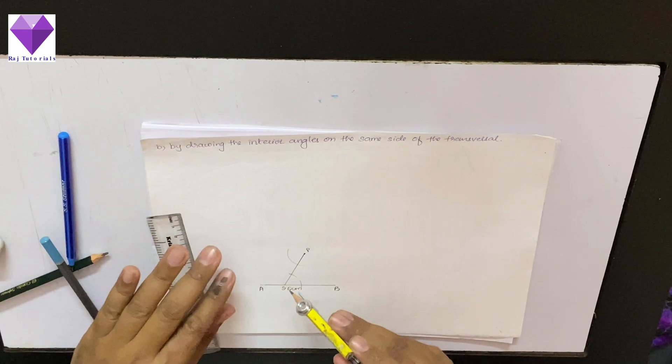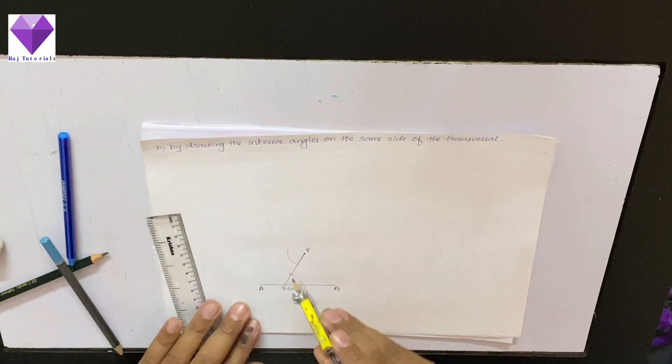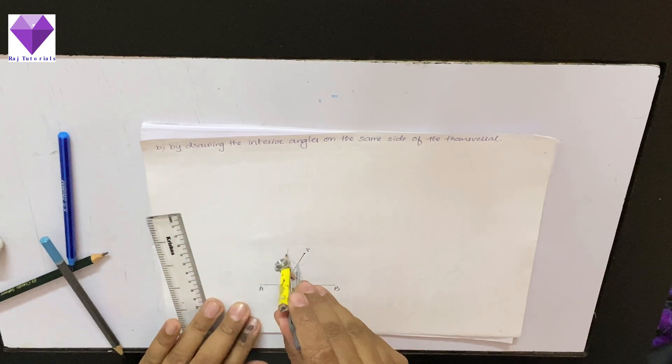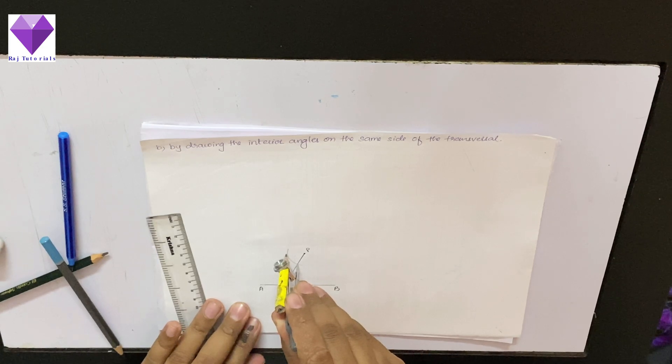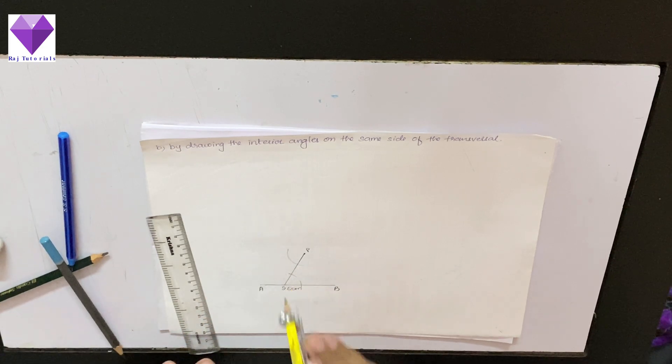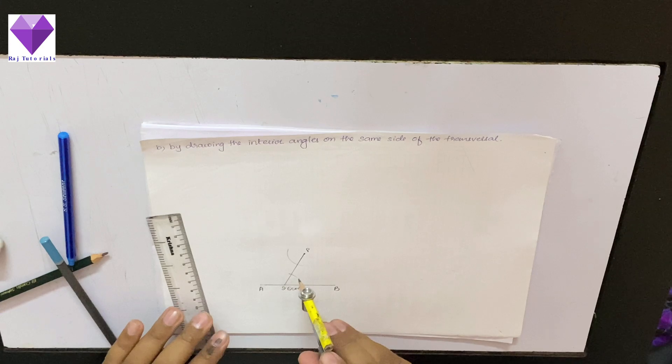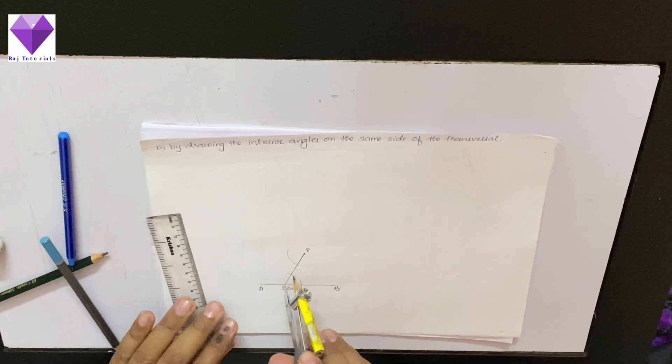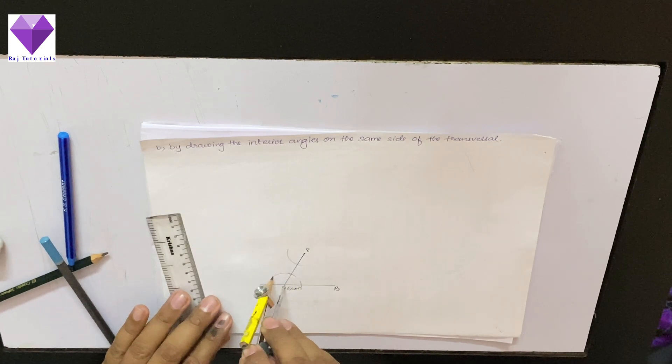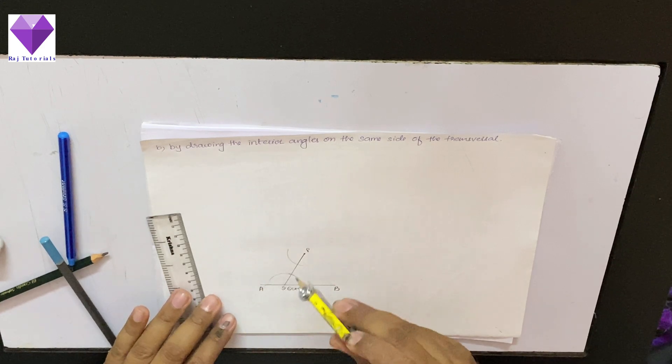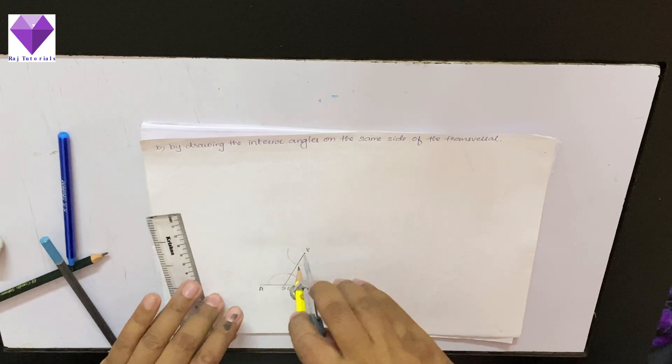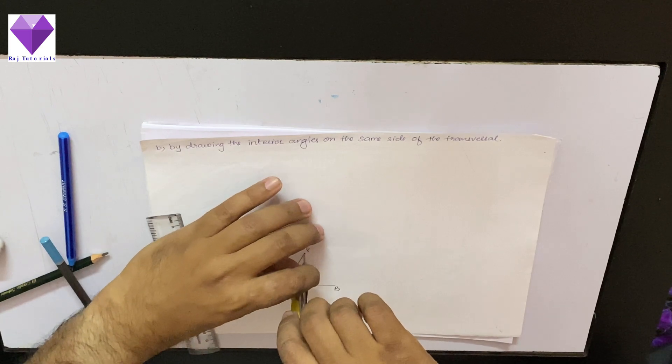So, now I am measuring this, and if I cut it here, so my first angle, my first technique, that is alternate interior angles is done. But here what I am doing, I am with the same center, I am making a semicircle. And here also, I am creating a semicircle on both the sides.